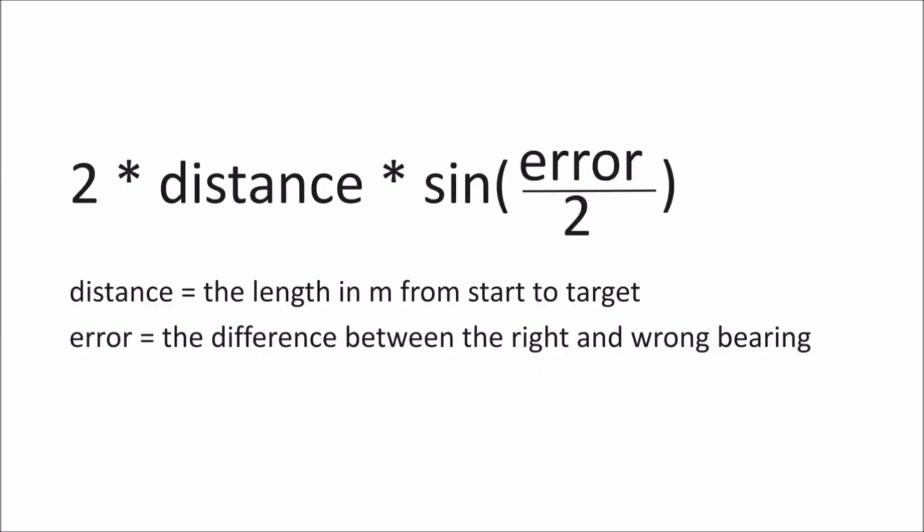So that's the function: it's 2 times the distance times the sine of the error divided by 2. It may be a good idea to screenshot what's on your screen at the moment and save it on your phone as a reminder. That's the end of the first part of the video, so that's it — you're finished. Or if you want, in the next part I'll show you why that particular function works as it does.